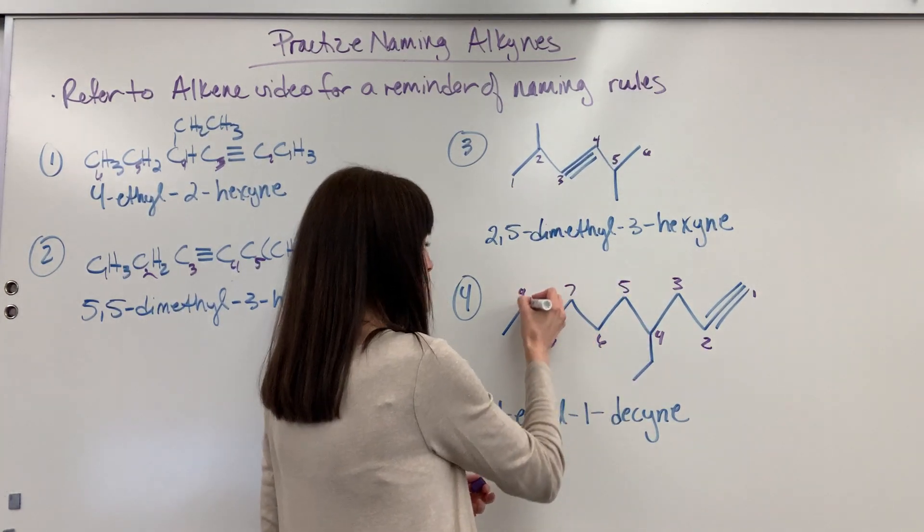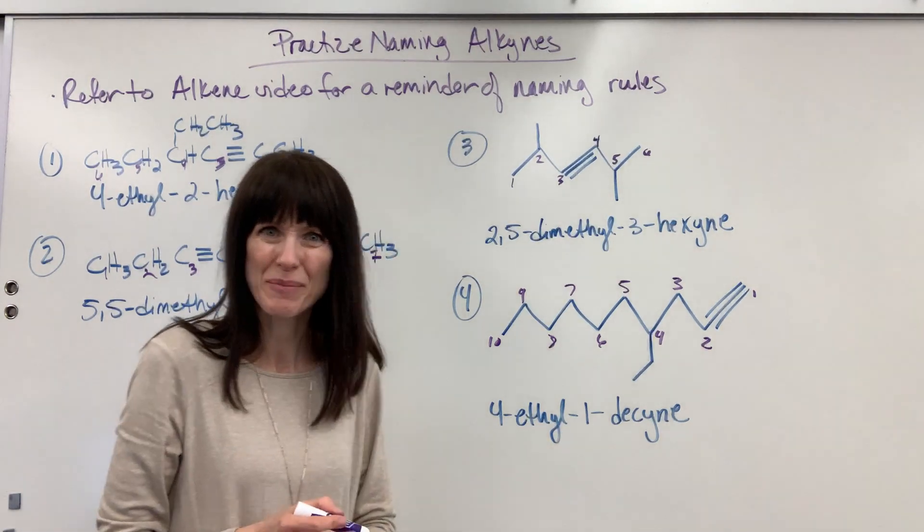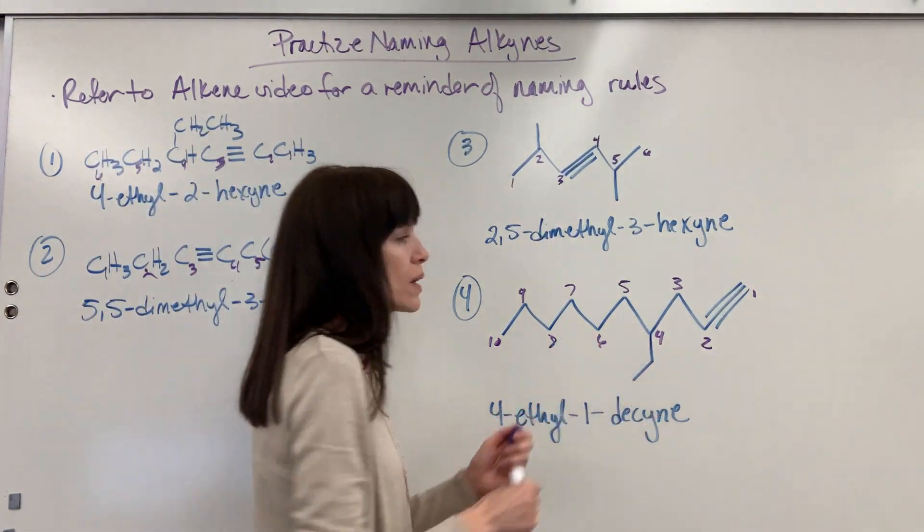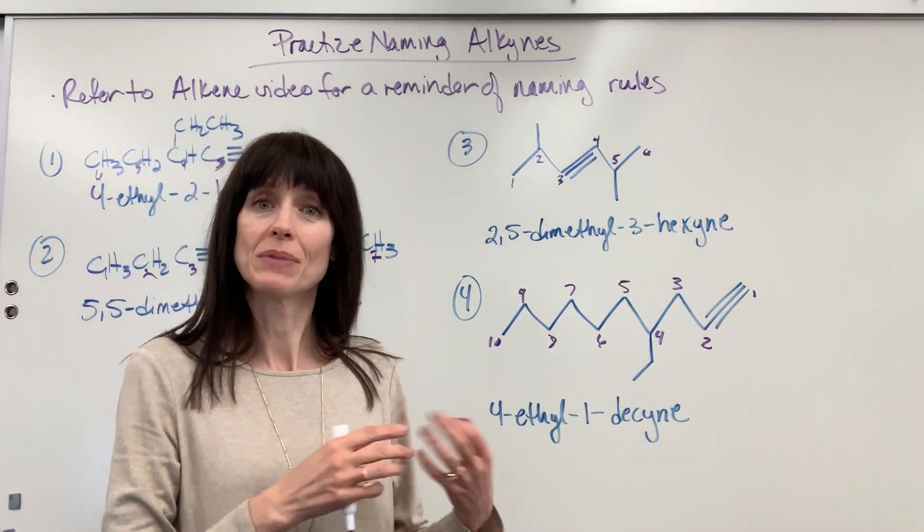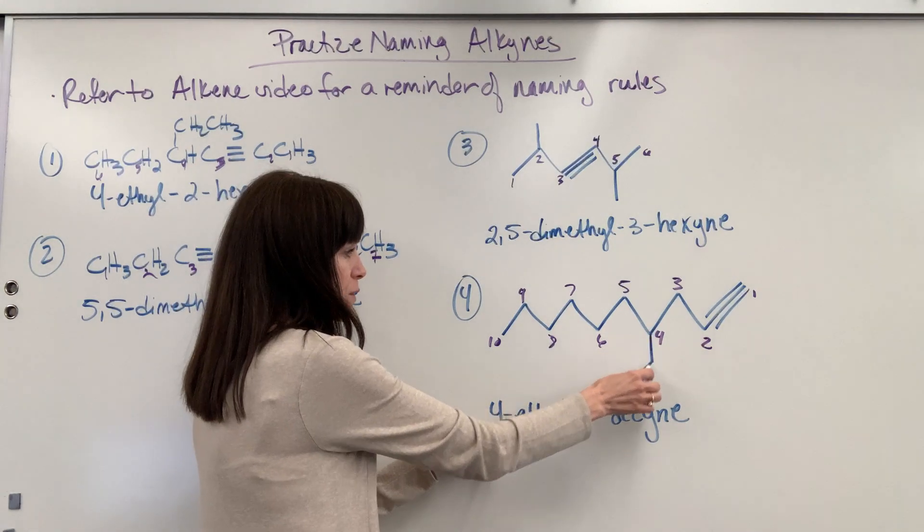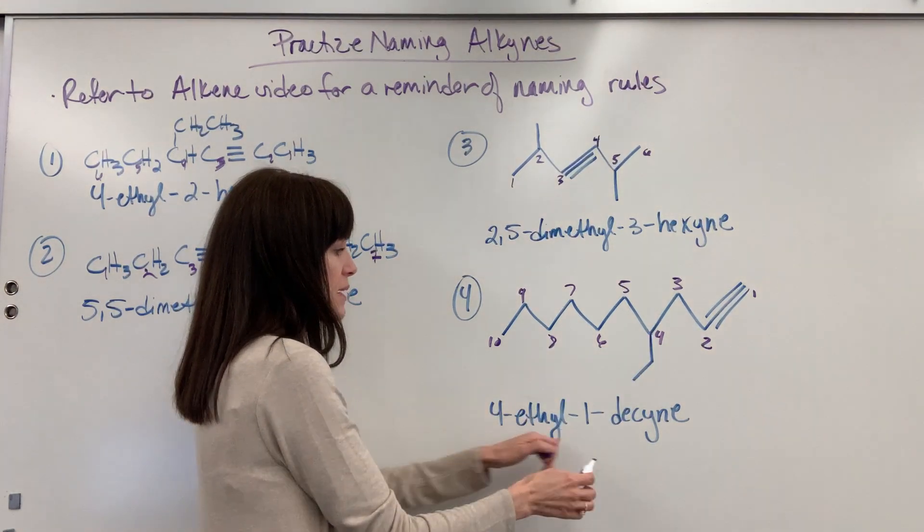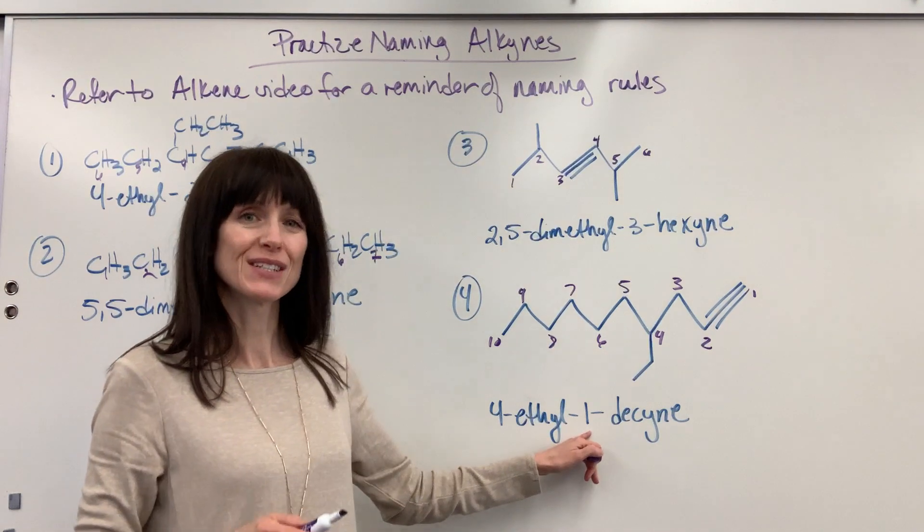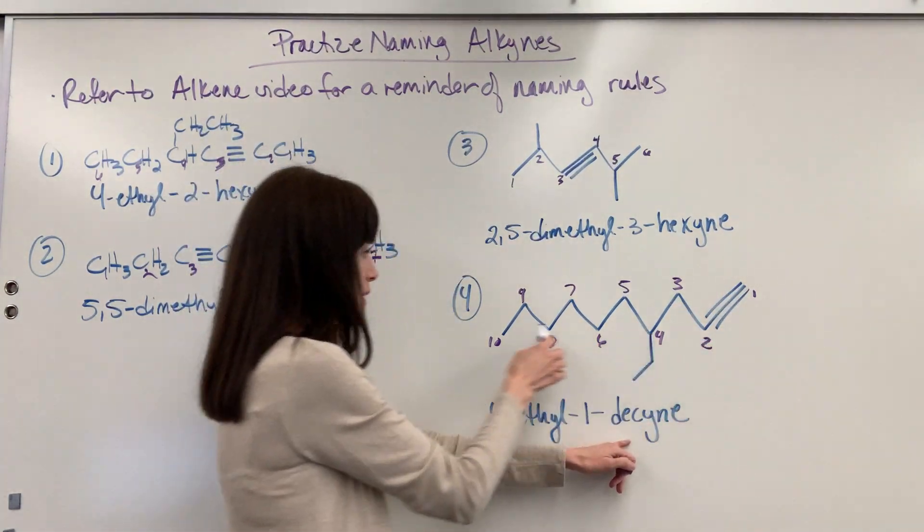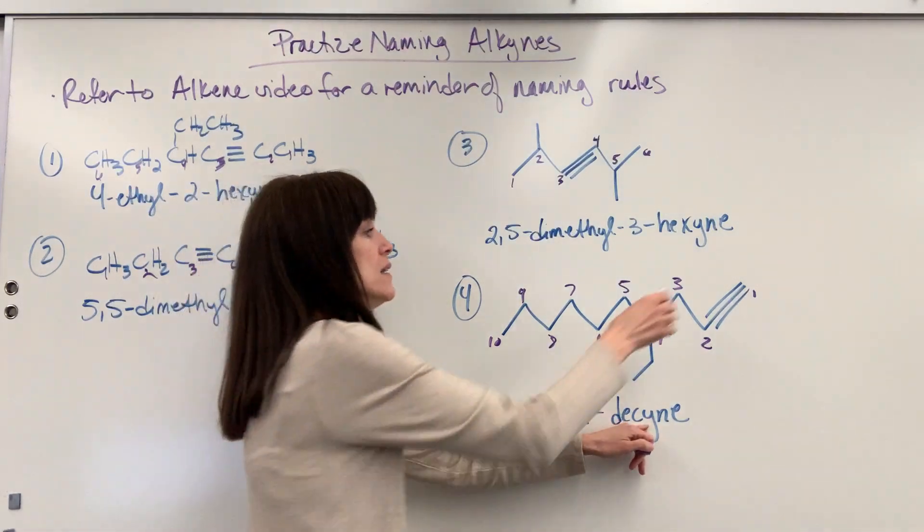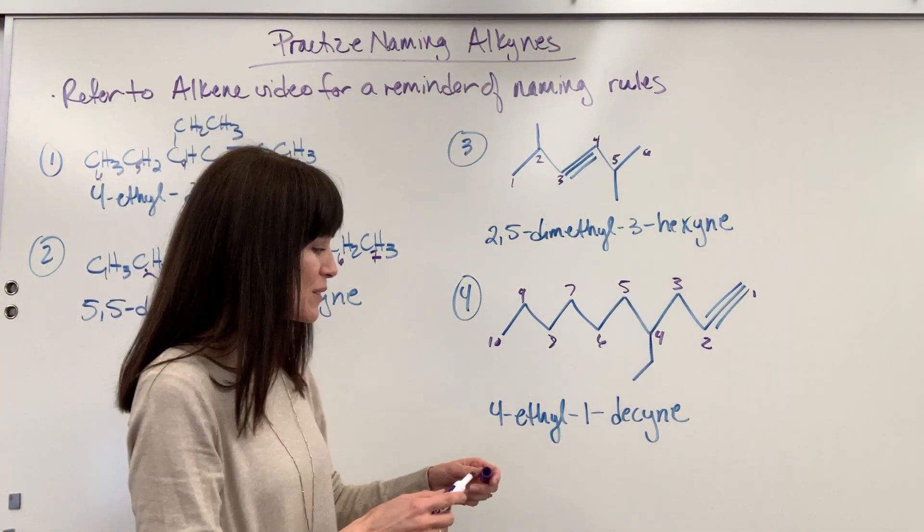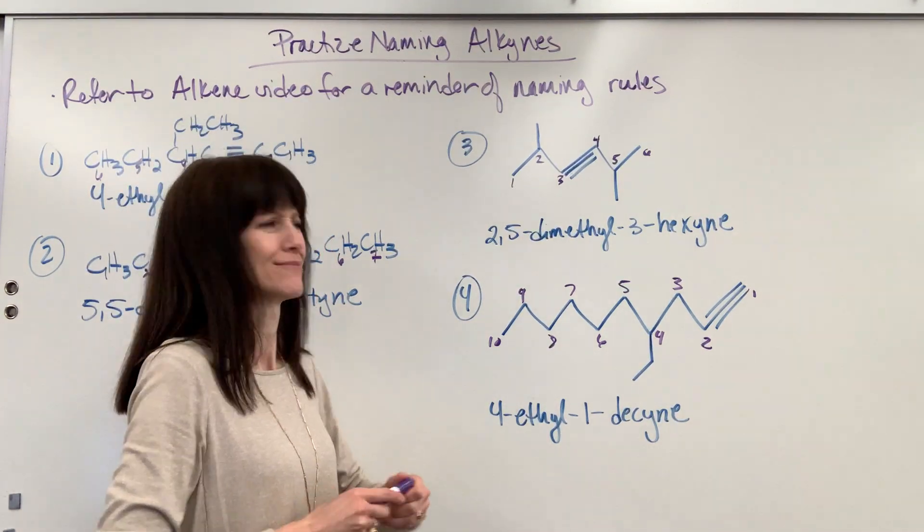And now this is my substituent. And there's one, two carbons. Again, two carbons. That's ethyl. It's going to be an ethyl group. So we've got four ethyl. That ethyl group is attached to the number four carbon. One. The first carbon to touch that triple bond is carbon number one. One. And then I had ten carbons in this parent chain. Decyne for that triple bond. One more time. Four ethyl, one decyne. Very cool.